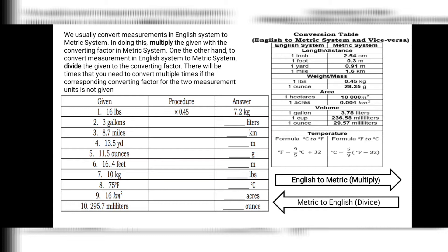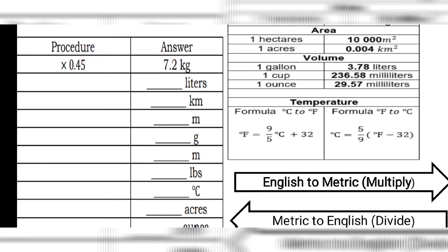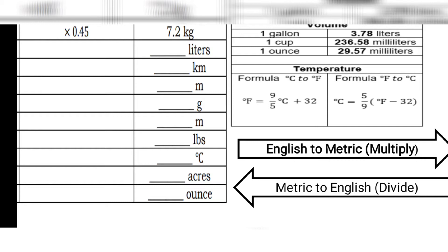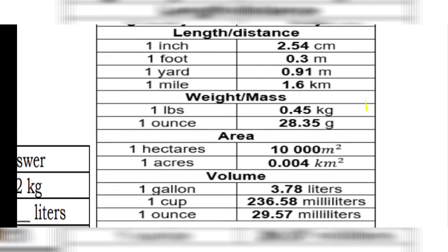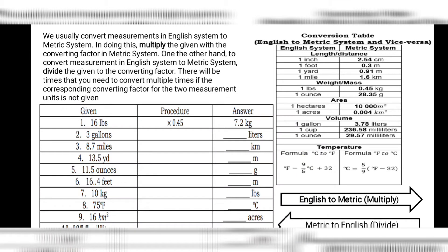On the other hand, to convert from metric system to the English system, we divide. So to summarize: English to metric — we multiply; metric to English — we divide. You need to know the converting factors, which are sometimes given and sometimes you have to memorize.